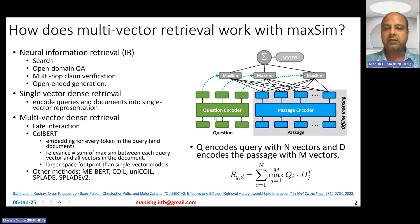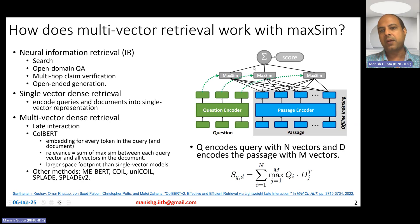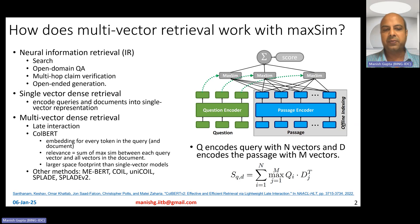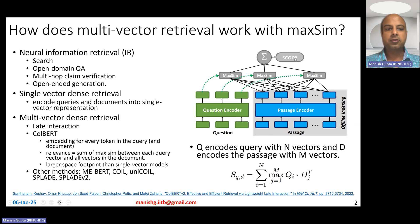The relevance between the query and document is computed using a function called MaxSim. Relevance is computed as the sum of the maximum similarity between each query vector and all vectors in the document. You take the first query vector, find the most similar document-side vector, do the same for the second and third, and add them all up to get the overall score.